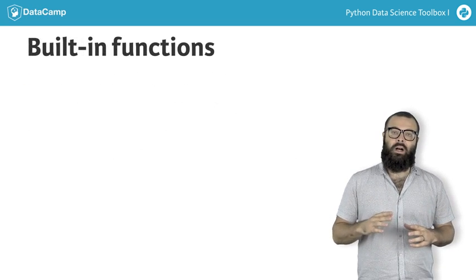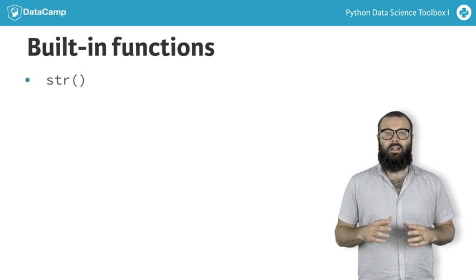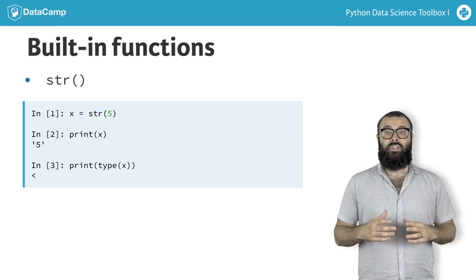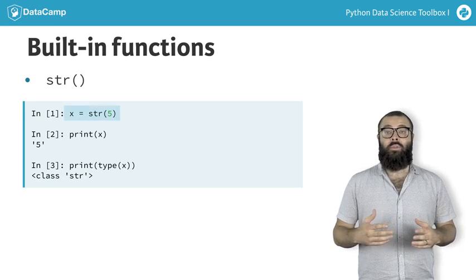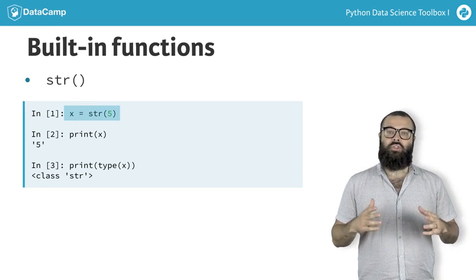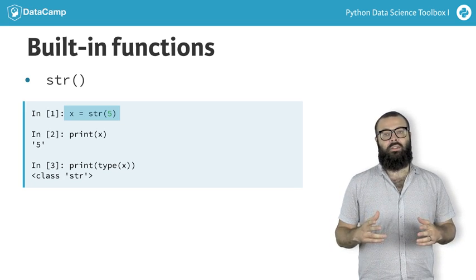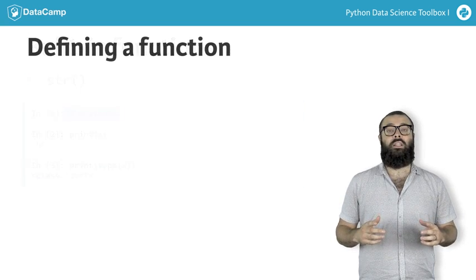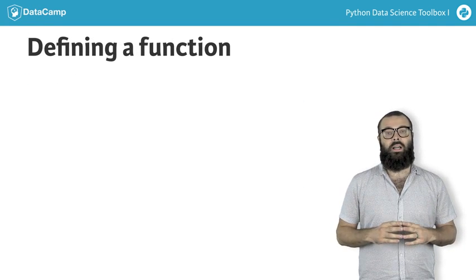Let's first check out Python's built-in function str, which accepts an object such as a number and returns a string object. You can assign a call to str to a variable to store its return value. While built-in functions are cool, as a data scientist you'll need functions that have functionality specific to your needs. Fortunately, you can define your own functions in Python.